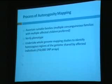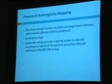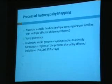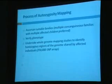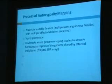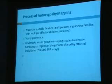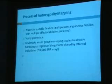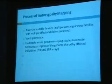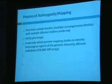Having obtained DNA samples from the appropriate families, we then undertake whole genome mapping studies. Initially this was with microsatellite markers, and then we moved on to single nucleotide polymorphism microarrays, starting with 10,000-SNP arrays, then 50,000-SNP arrays, 250,000-SNP arrays, and more recently 500,000-SNP arrays.